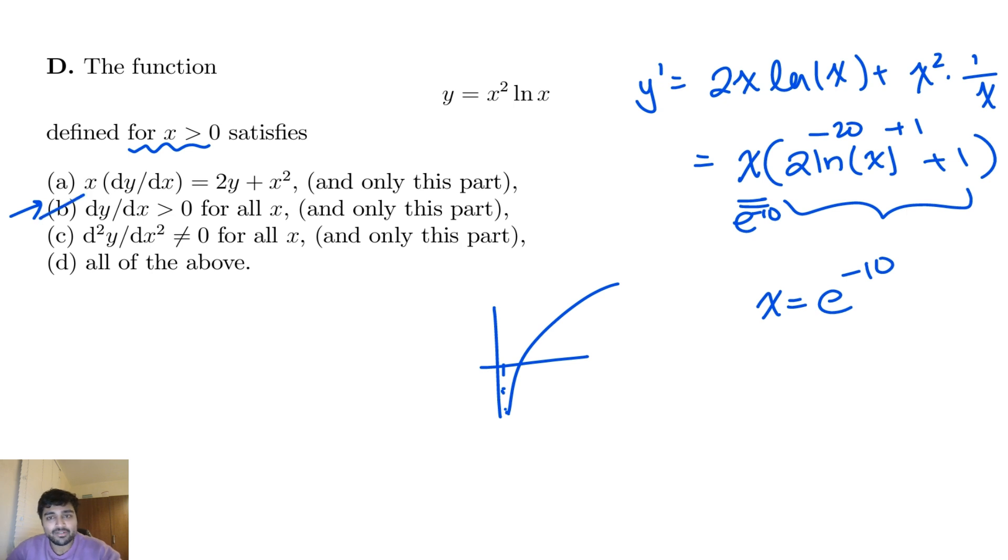So b is definitely not true. And so therefore, with that, I also get d. And so therefore, the answer must be a or c, and it's actually not too difficult to see that it must be a.